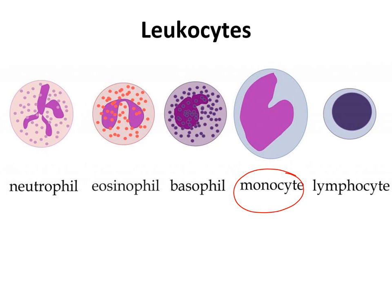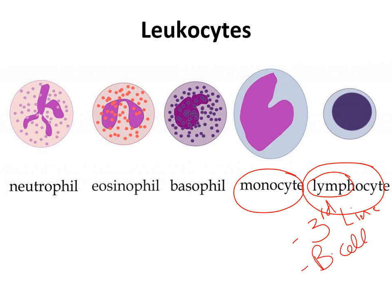The last white blood cell type to mention now are the lymphocytes, which are mainly found in the lymph nodes. The two types of lymphocytes are B cells and T cells. These are part of your third line of defense — your specific immune response — and will be discussed in much more detail in chapter 17.